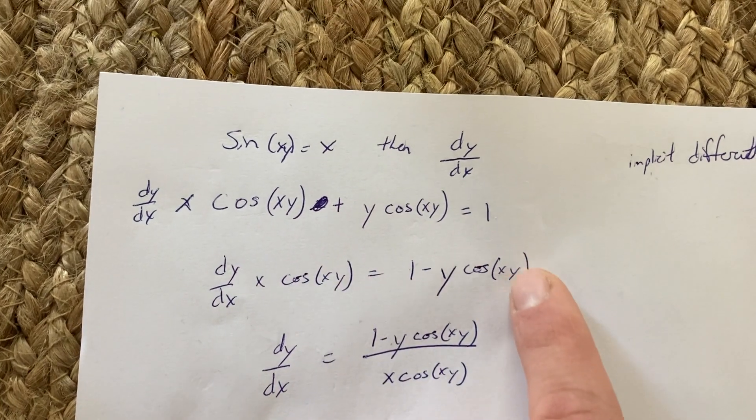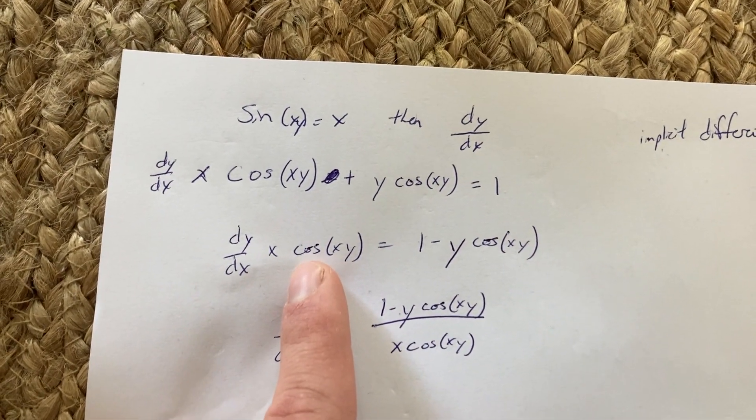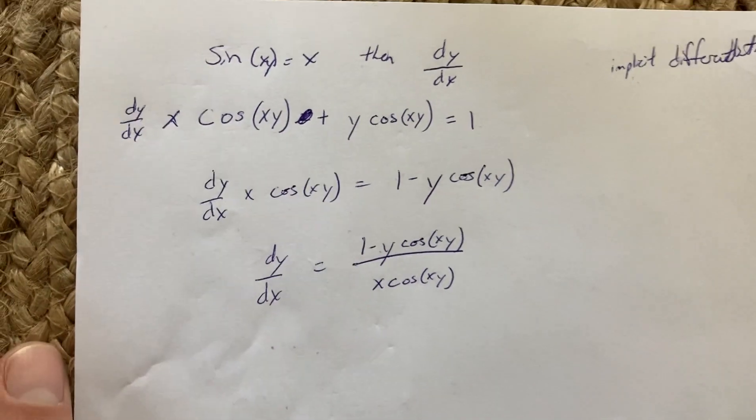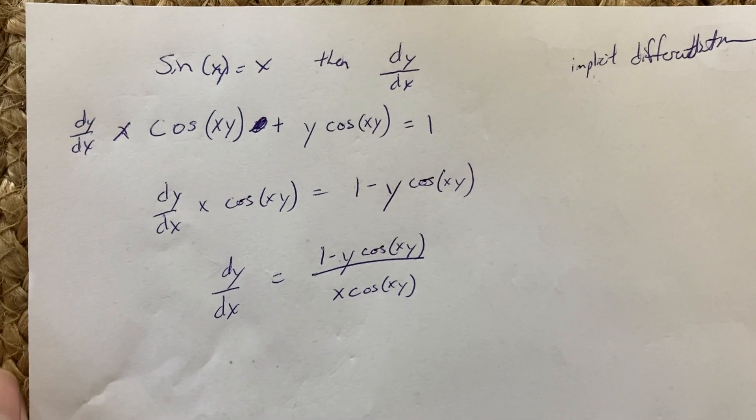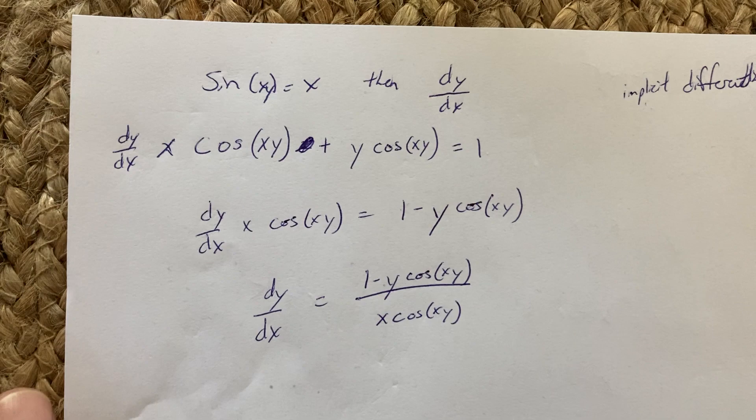So we subtract that over, and then we're going to divide by x cosine(xy). So dy/dx equals 1 minus y cosine(xy) over x cosine(xy).